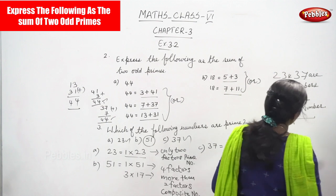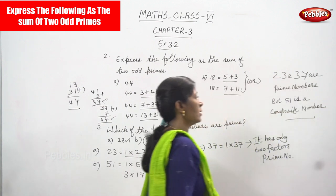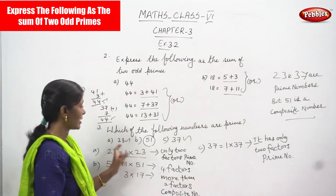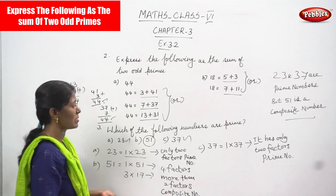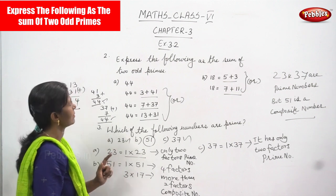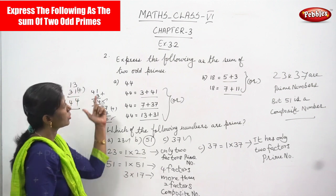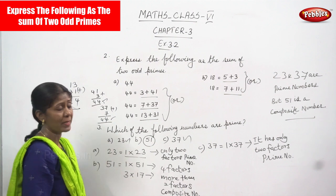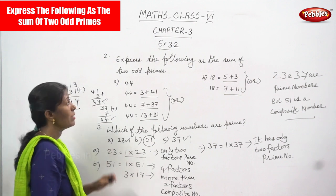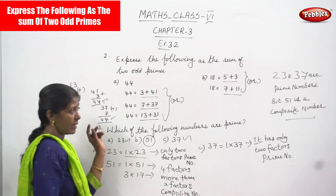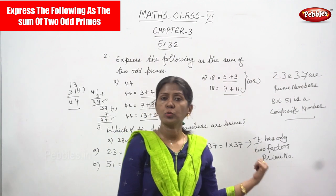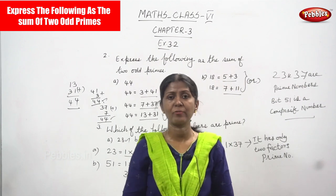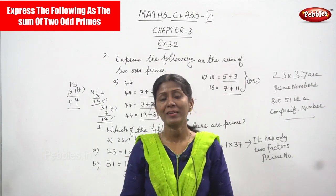So I think you understand how to find out prime numbers very clearly, and also how to express numbers as the sum of two odd prime numbers. Go through the videos once or twice and you can clarify your doubts very clearly.